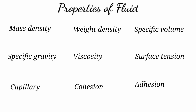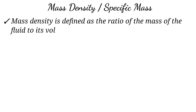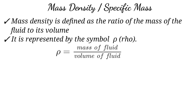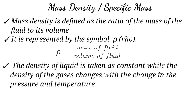The first property is mass density, also called specific mass. Mass density is the ratio of mass of a fluid to its volume. It is represented by the symbol rho (ρ). Mathematically, ρ = mass / volume. Mass density is actually pressure and temperature dependent.